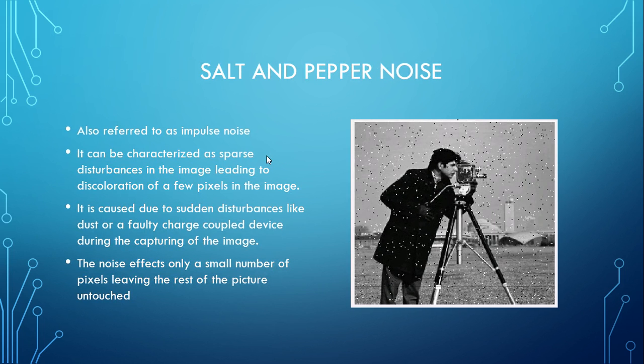Salt and pepper noise is a very interesting kind of noise, also referred to as impulse noise. It can be characterized as sparse disturbances in the image leading to discoloration of a few pixels. As you can see, a few pixels have become black and white but the rest of the image is left untouched. It is caused due to sudden disturbances like dust or a faulty charge-coupled device during image capture.